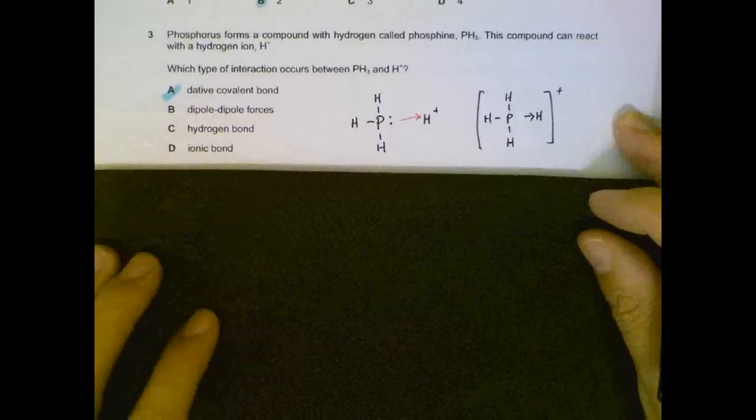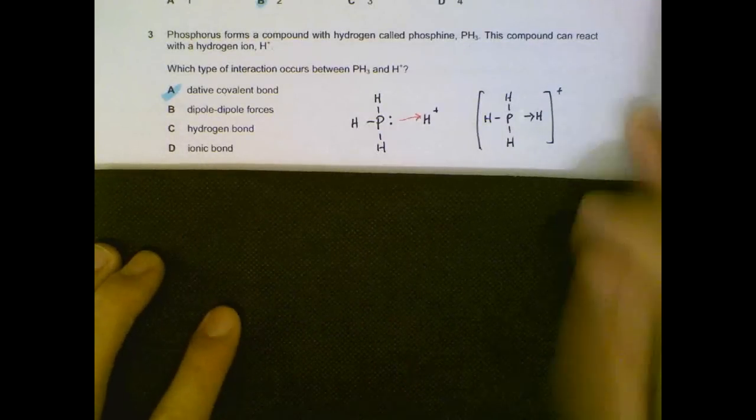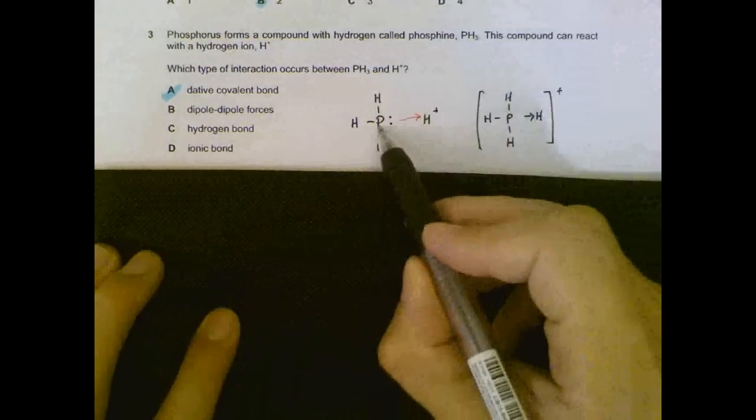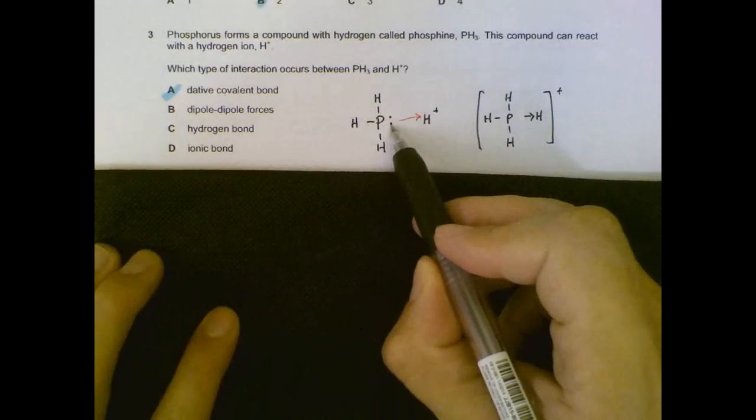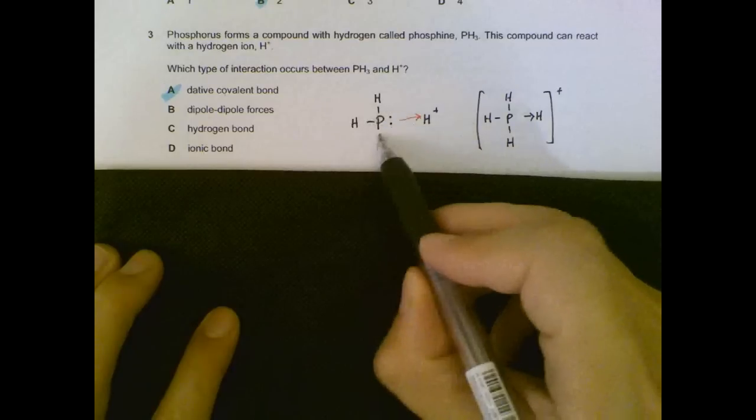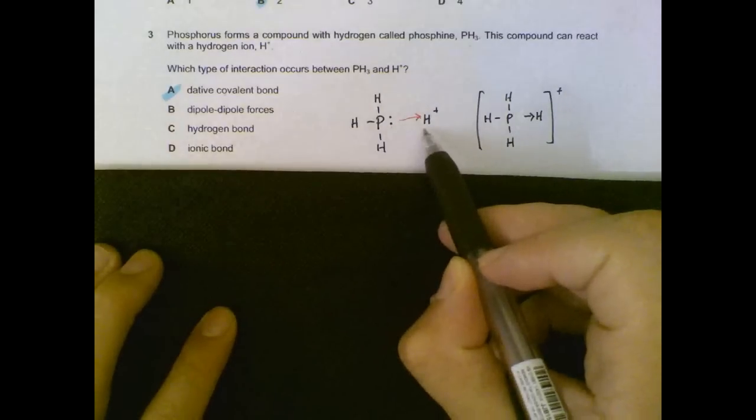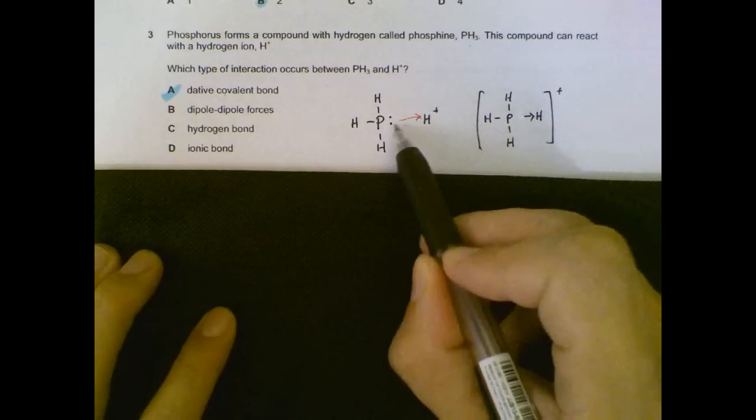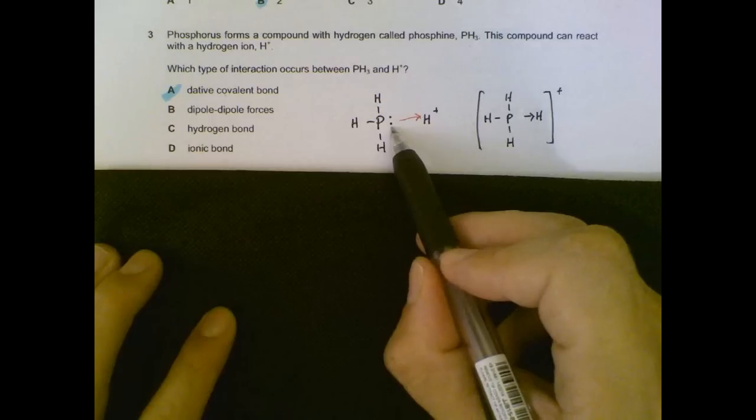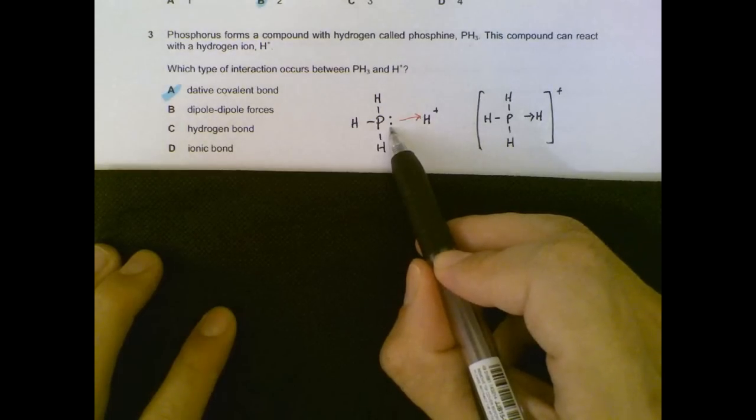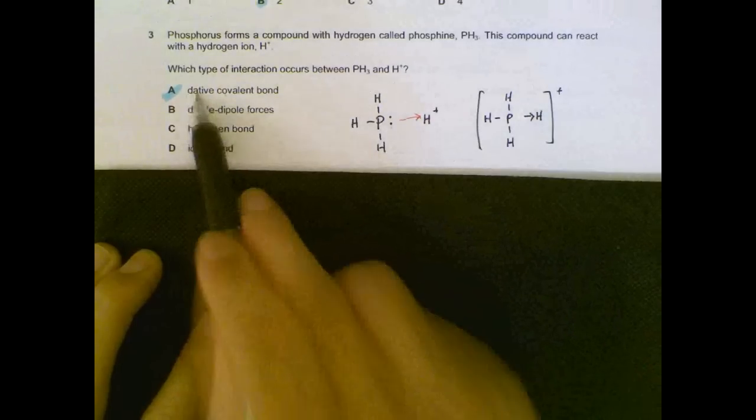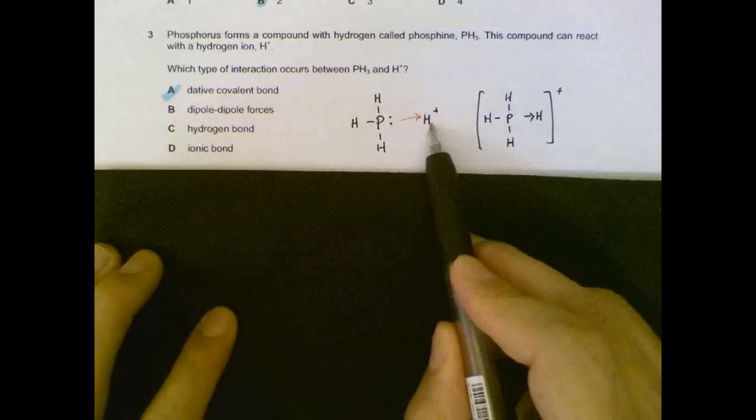Number 3. We have phosphine, PH3, and the phosphorus has one lone pair. Three of the electrons are used for bonding, covalent bonds. One pair of electrons are not used. Hydrogen has an empty orbital. It doesn't have any electrons. So when it forms a covalent bond, the lone pair from the phosphorus is the one that provides both electrons. So it forms a dative bond. That's a dative bond between PH3 and hydrogen ion.